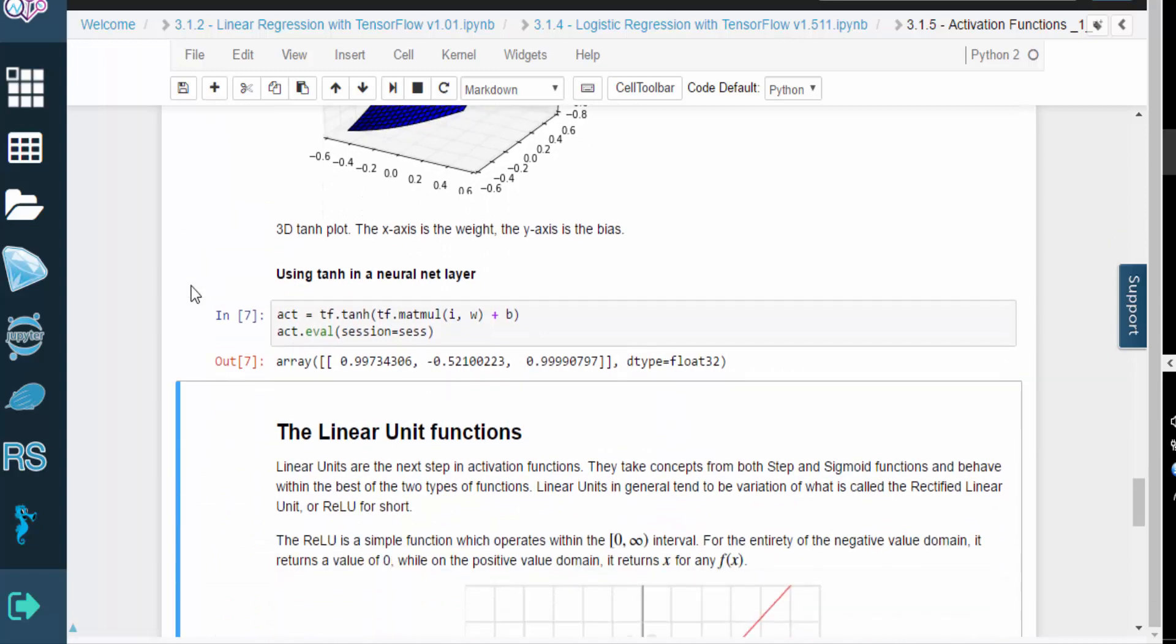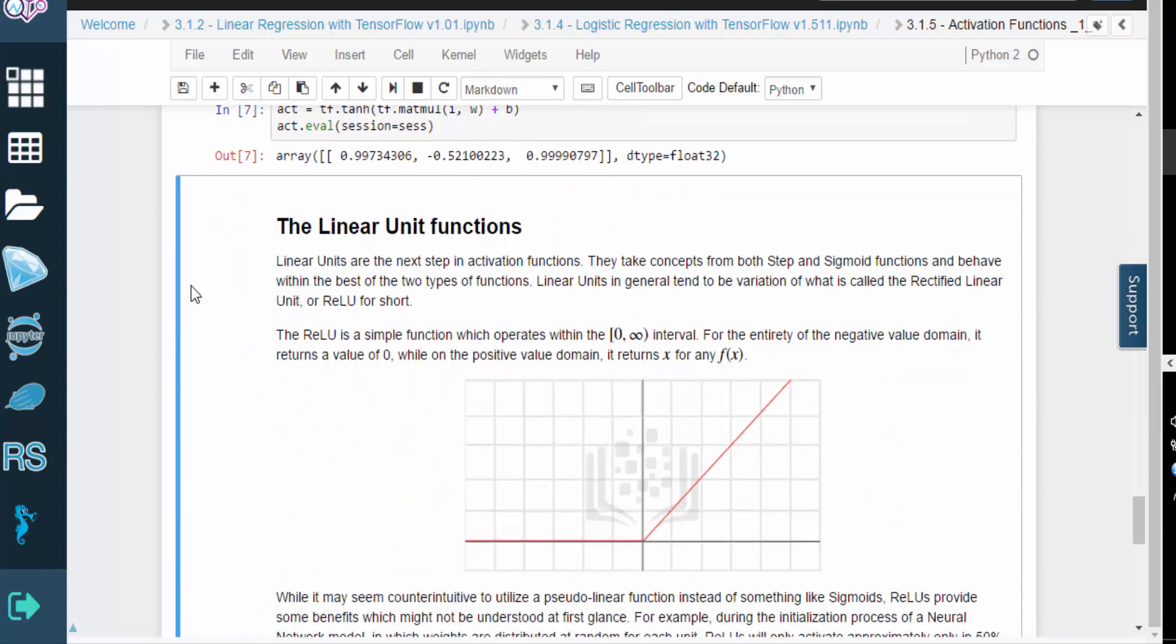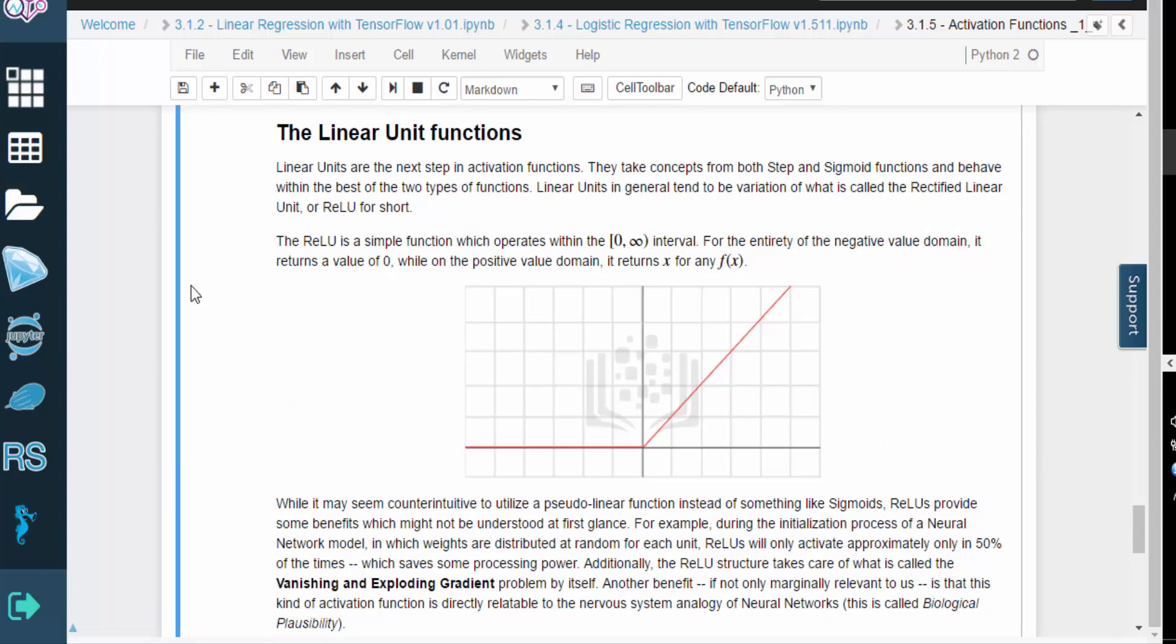Linear units form an important category of activation function by combining the best concepts from step and sigmoid. In general, all the linear unit variations stem from something called the rectified linear unit, or RELU for short. RELU is a simple function that outputs a value from 0 to infinity. So say we have some input x. If x is negative, RELU outputs 0. But if x is non-negative, RELU just outputs x.